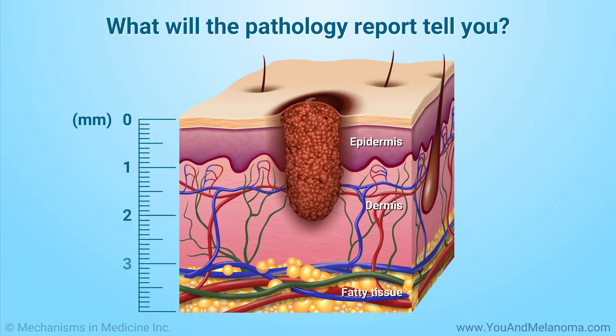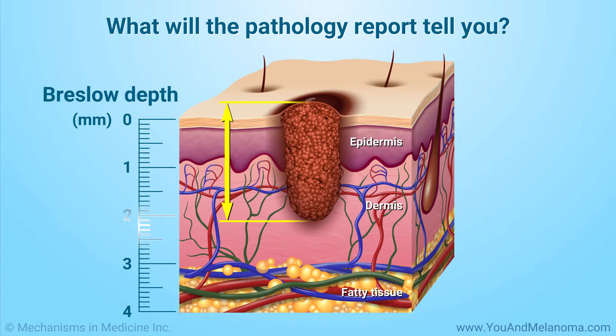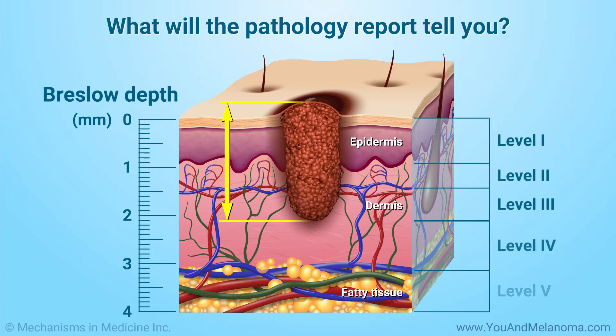How deep is the tumor at its thickest point? This is called the Breslow depth. How deeply has the tumor penetrated the skin? This is called the Clark level.